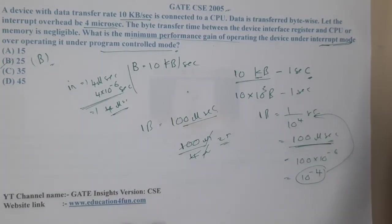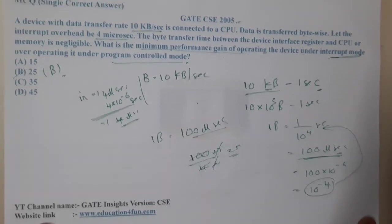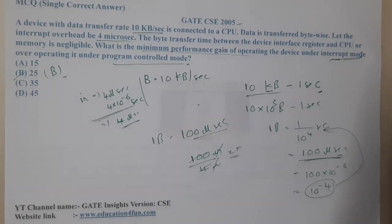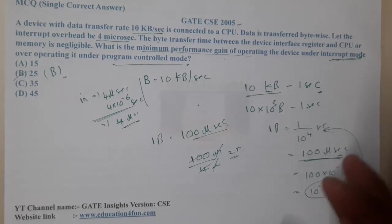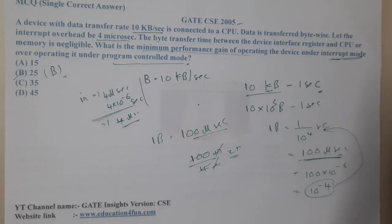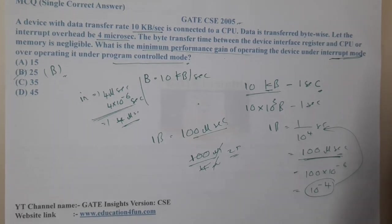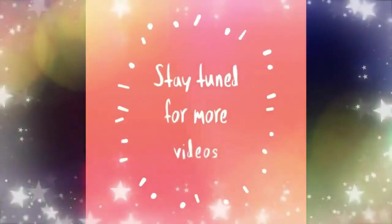This is a direct type of question. The ratio between with-interrupt and without-interrupt (polling) mode is calculated that way. I hope everyone got a clear idea. In the next lecture we'll continue with the next question. Thanks for watching — like, share, and subscribe for more videos.